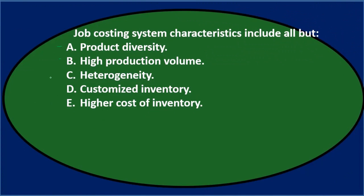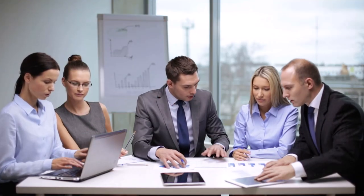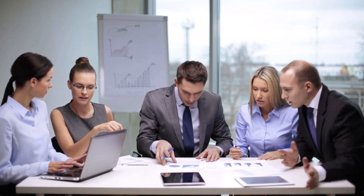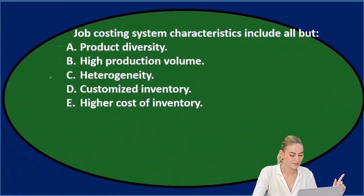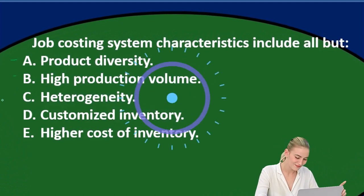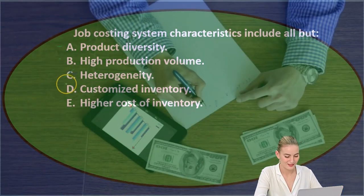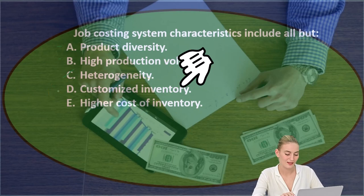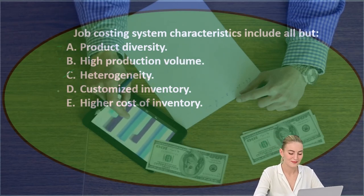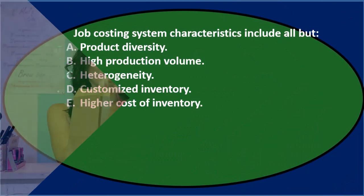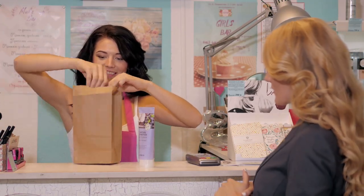This problem is contrasting the job cost system against the process cost system, so we have to keep that in mind. There's going to be diversity in a job cost system — some may have more heterogeneity than others, but compared to a process cost system there's more difference in types of inventory. Option D, customized inventory — compared to a process cost system it's going to be more customized.